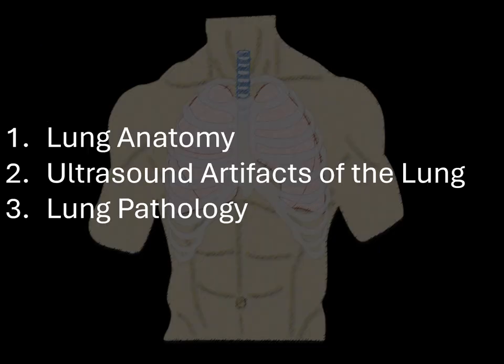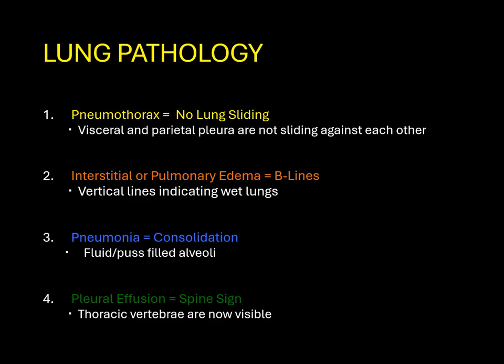Now that we know lung anatomy and artifacts, we'll discuss specific lung pathology. The four pathologic states we'll look for are pneumothorax, interstitial or pulmonary edema, pneumonia, and pleural effusion. We'll start with the pneumothorax, which is diagnosed by looking for a lack of lung sliding — that is, you do not see the visceral and parietal pleura sliding against each other.